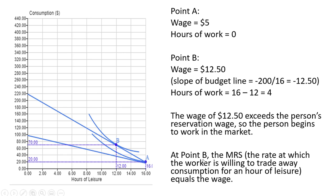Another thing to note here at point B, the marginal rate of substitution, the rate at which the worker is willing to trade away consumption for an hour of leisure, equals the wage. In other words, the slope of the indifference curve equals the slope of the budget line.